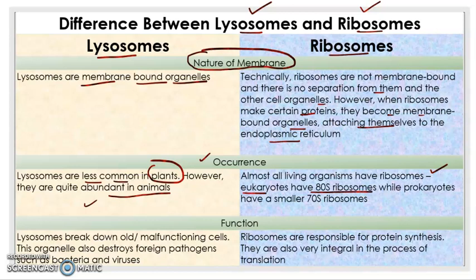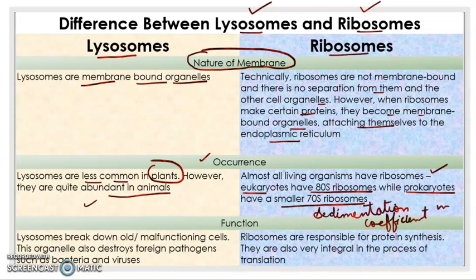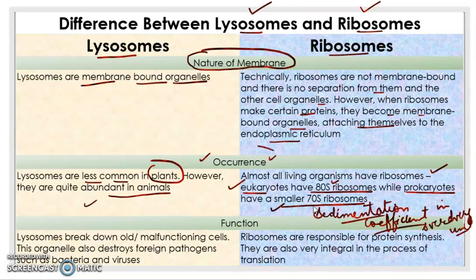Eukaryotes have 80S ribosomes, while prokaryotes have the smaller 70S ribosomes. The 'S' here refers to the sedimentation coefficient in Svedberg units — how fast the subunits of the ribosome will sediment. For eukaryotes, the sedimentation coefficient is 80S, and for prokaryotes it is 70S. So prokaryotes have smaller ribosomes and eukaryotes have comparatively larger ribosomes.